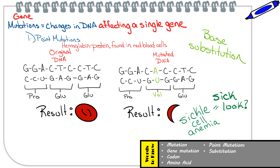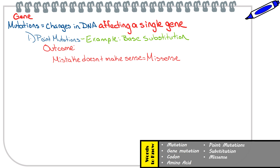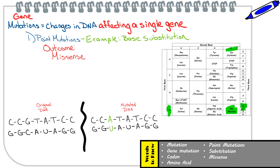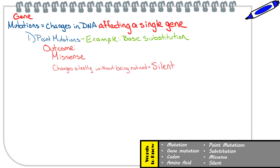We refer to this type of point mutation outcome as a missense mutation. This type of outcome will cause the amino acid sequence to not make sense anymore due to the point mutation. Now, it's important to note that not all mutations will have drastic effects like this one. There are actually some mutations that may not affect the protein at all. For instance, the G has been substituted with an A, which caused the mRNA codon to change from GGC to GGU. Both codons code for the same amino acid, glycine, meaning the protein is not affected by this mutation, which is why we call this type of mutation outcome a silent mutation. Silent mutations often go unnoticed because the amino acid sequence isn't actually affected.